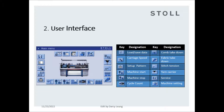Machine start: for re-knit pattern or restart pattern when pattern cannot complete, such as yarn break or wrong program. Machine stop and option situation. Cycle count: normally used to repeat cycle knit pattern rows or count pieces. Comb takedown: manages comb and fabric takedown parts.